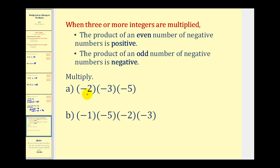So here we have negative two times negative three times negative five. Notice we have one, two, three negatives being multiplied together, which is an odd number of negatives. Therefore this product will be negative. Once we determine the sign, we can just multiply two times three times five, which gives us thirty. So our product is negative thirty.